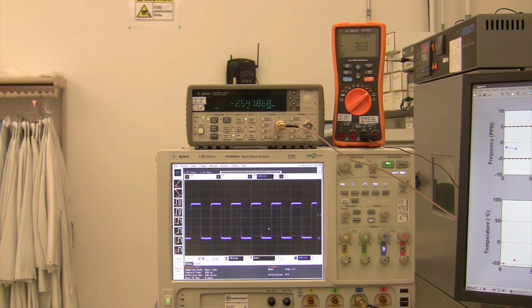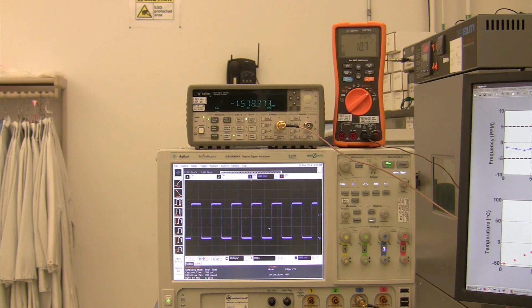With the TCXO at an initial temperature of minus 40 degrees C, we'll ramp up the temperature up to 85 degrees C.